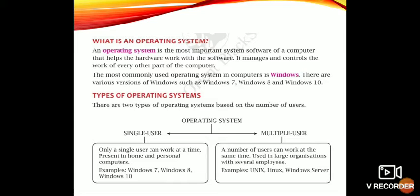Next, types of operating system. There are two types of operating system: single user and multi user. Single user means only one person is using the operating system. If more than one person needs to use the operating system, that is called multi user.